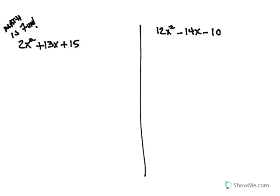Okay, so we're factoring trinomials here. We have 2x squared plus 13x plus 15. So I do the AC method, meaning you multiply A times C.